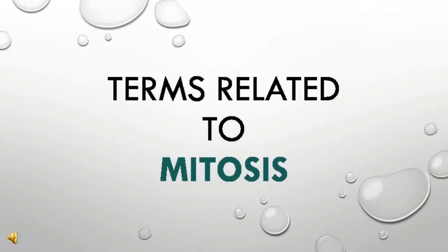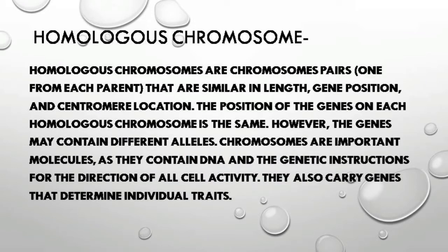Today we are going to discuss terms related to mitosis. Homologous chromosomes are a chromosome pair, one from each parent, that are similar in length, gene position, and centromere location.